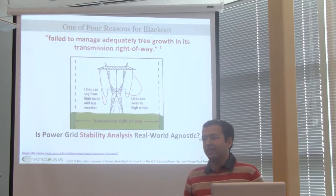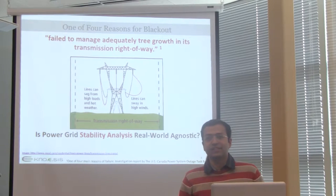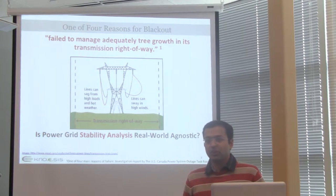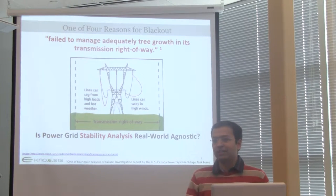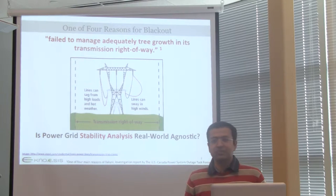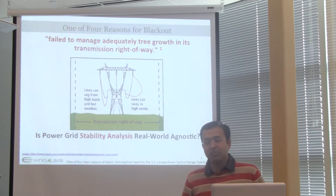Power grids are very well understood in terms of stability analysis, and there are transient stability mechanisms and simulations done to study the stability of a power grid. But was that real-world agnostic in this case? When you put a power grid in the real world, there are not only internal events that you need to take care of, but also external events that influence the power grid. Power grid is an example of a cyber-physical system, where there is computation, communication, and control — the three C's of a cyber-physical system.